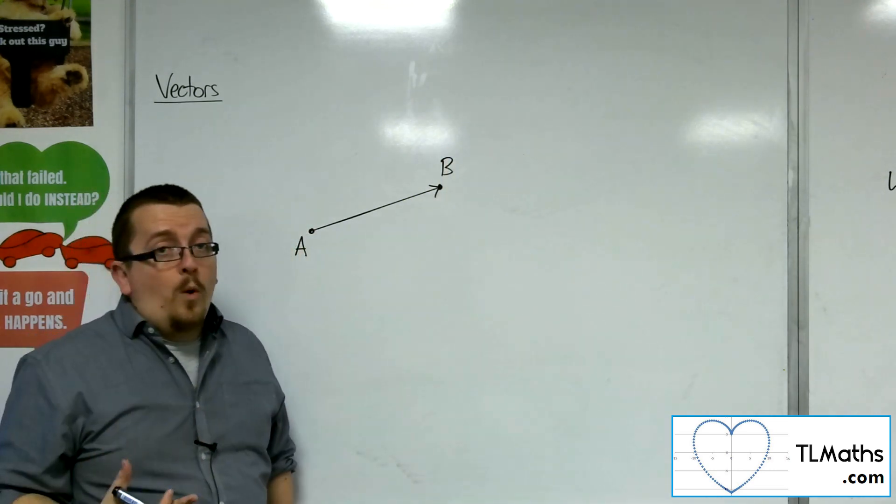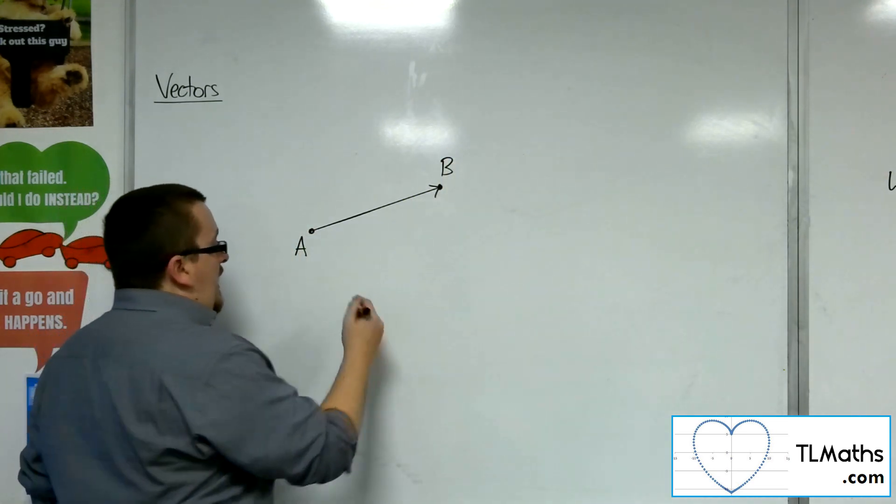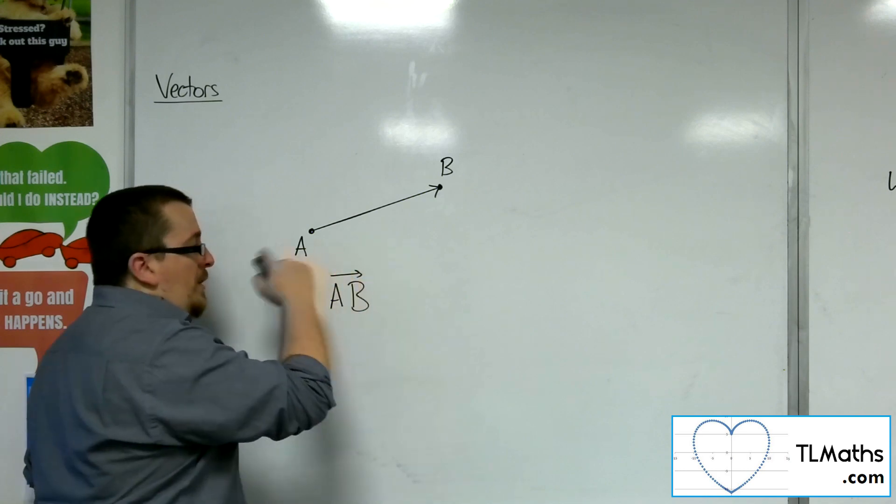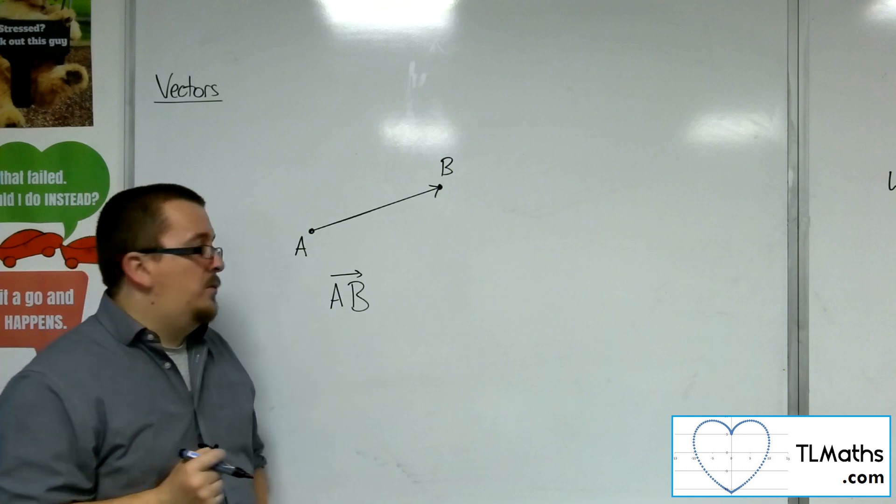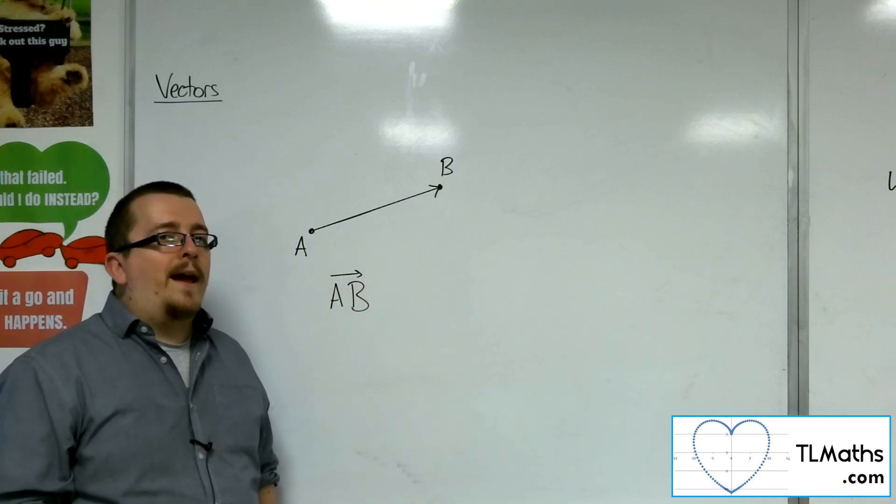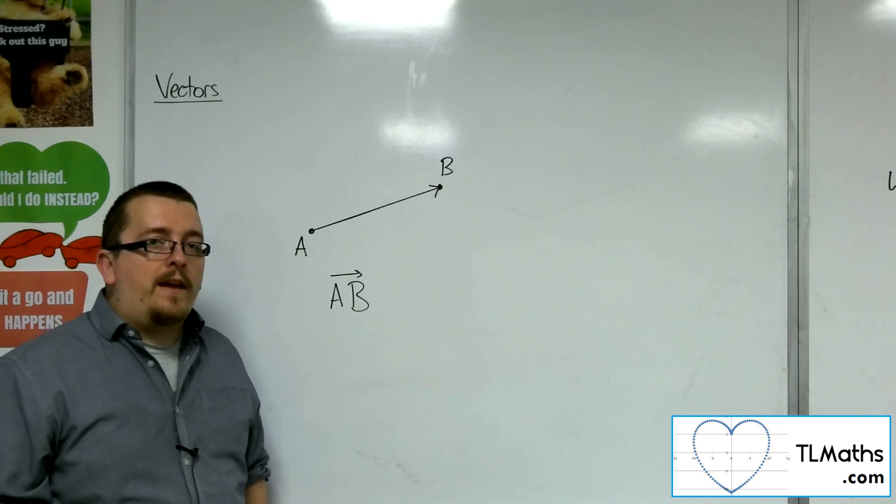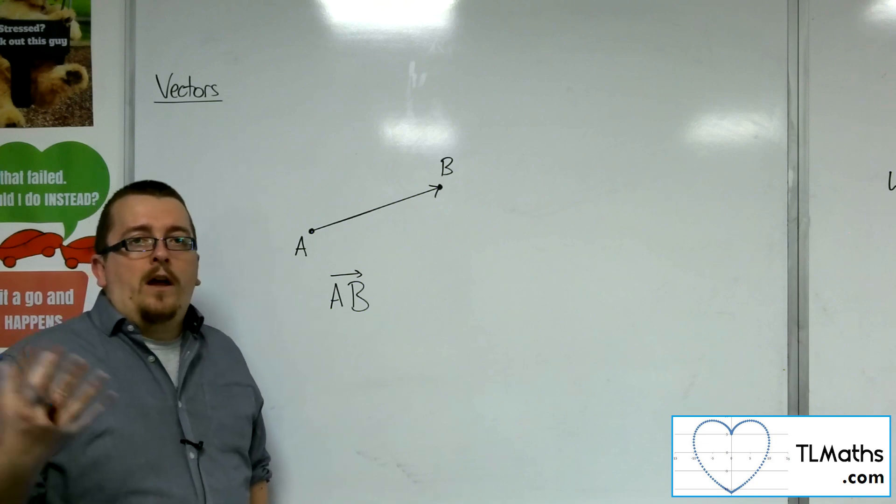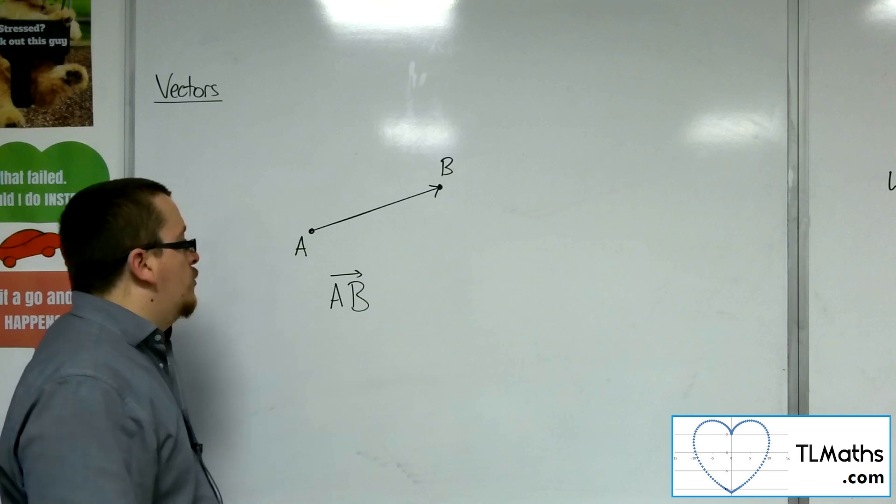Then one way of writing down this vector is to say that I am travelling from A to B, and I put a little arrow above the two letters, showing direction. It's not enough to just write down A, B. It needs to have the arrow there to identify some direction. Otherwise, it's just a chord, a chord length.